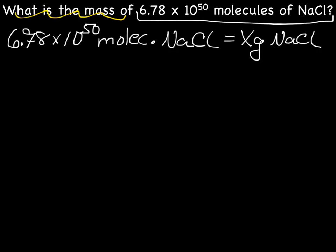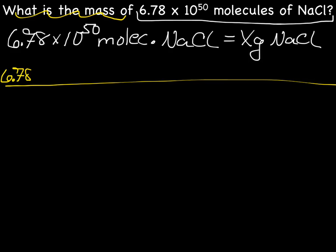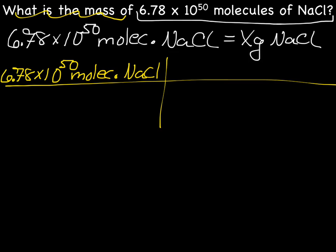Step 2: set up the grid and write our known. So our known is 6.78 times 10 to the 50th molecules NaCl over 1.